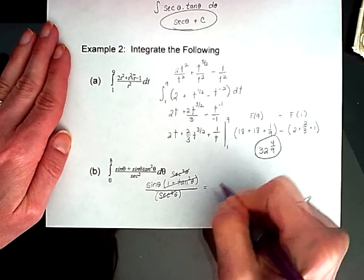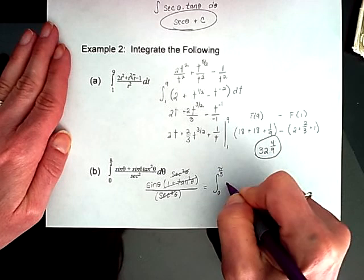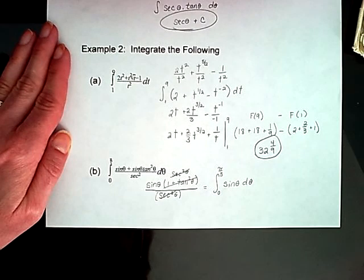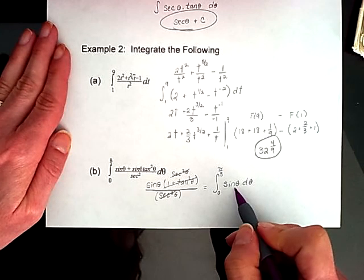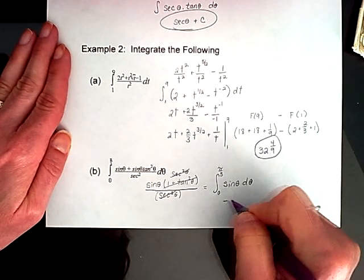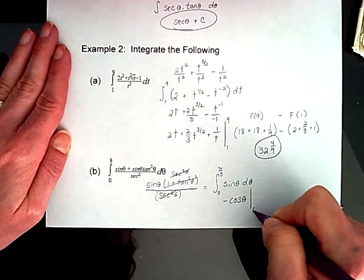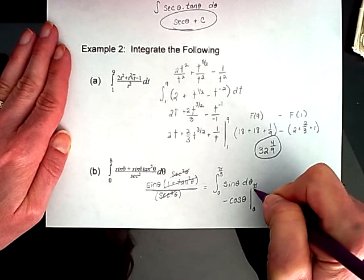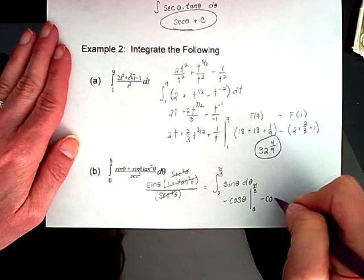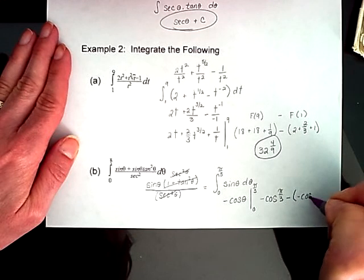So what I really want to do is integrate from 0 to Pi over 3, simply the sine of theta d theta. I'm not done. I have to find the integral of that. So I integrate that sine of theta, which gives me negative cos of theta. I'm going to run that from the endpoints 0 to Pi over 3. So I'll have to do a negative cosine of Pi over 3 minus a negative cosine of 0.